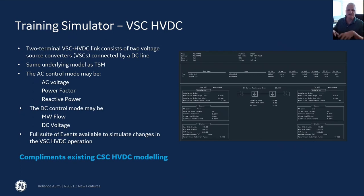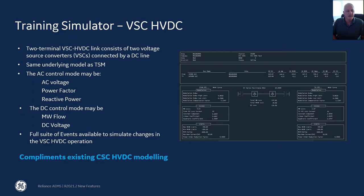The two ends can actually operate independently — if the link itself is down, you can still control the AC side. We call this STATCOM mode to control the voltage at the two ends. A full suite of events is available for the VSC HVDC, so you can model it becoming in-service, out-of-service, and changing the different set points. This complements our existing modeling for HVDC CSC — current source converter — which we call our classic HVDC. This is available in the current release of Reliance.